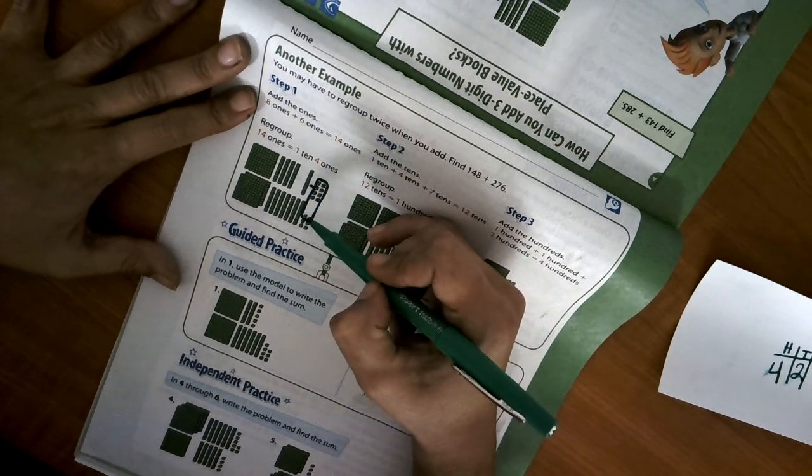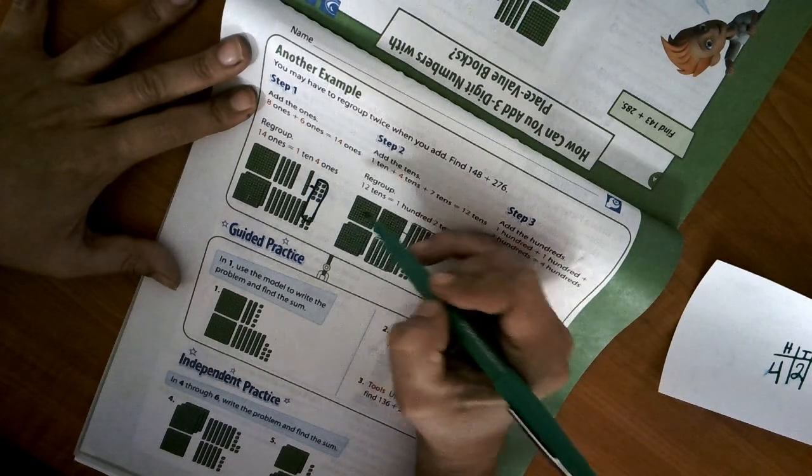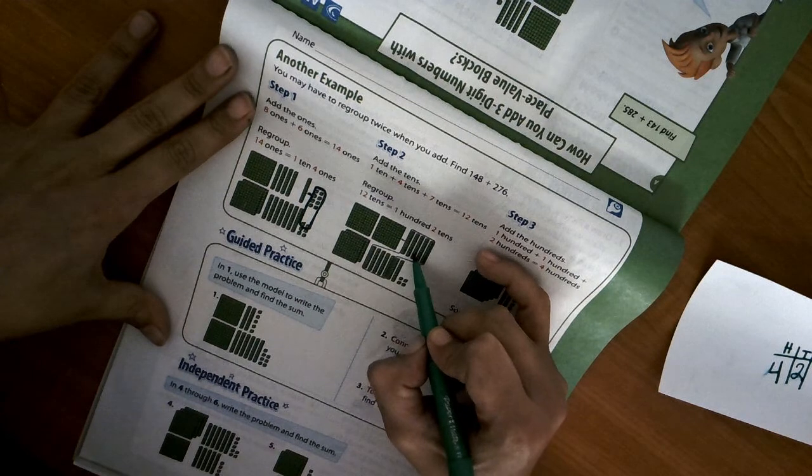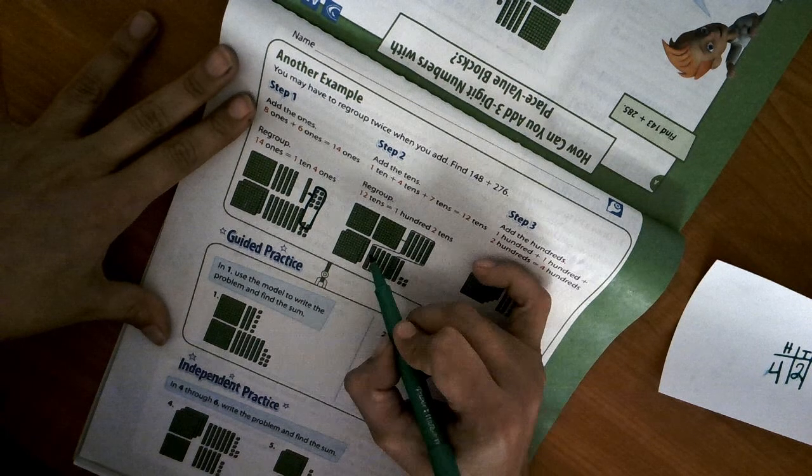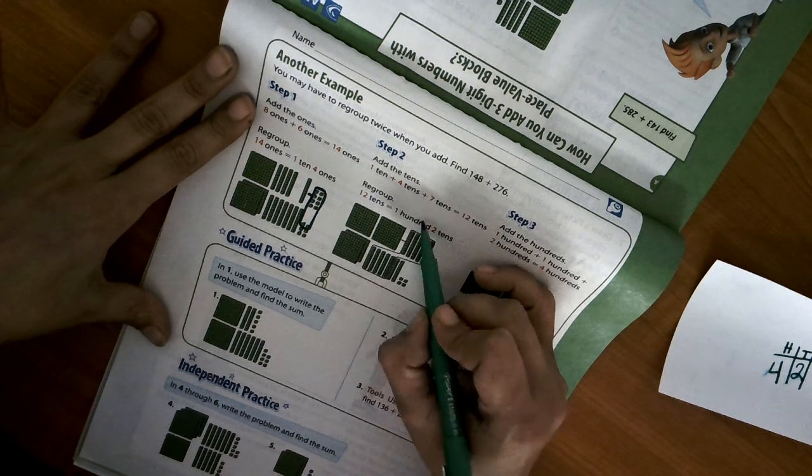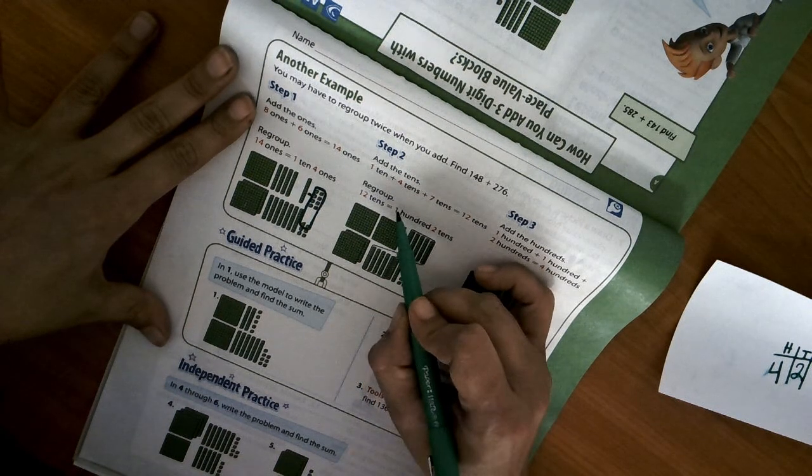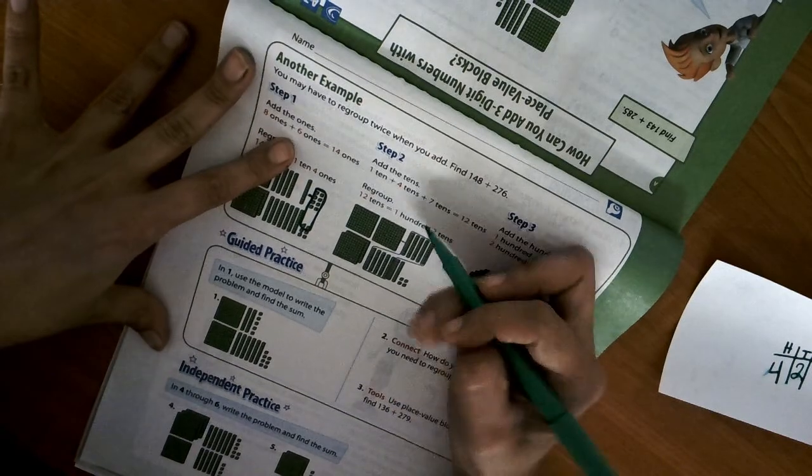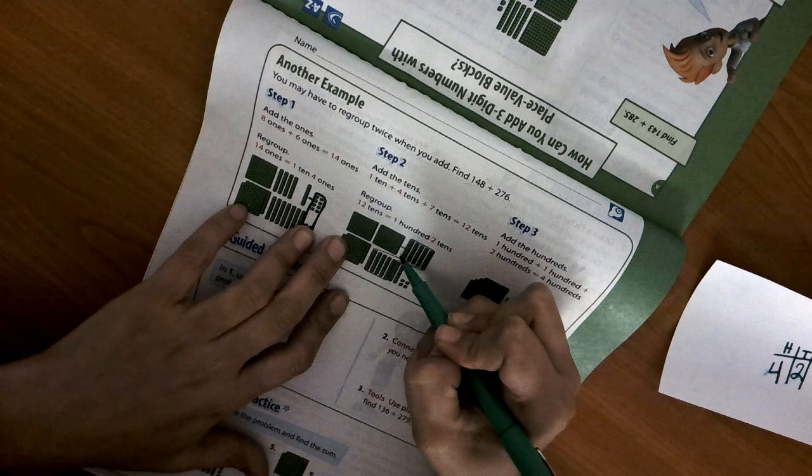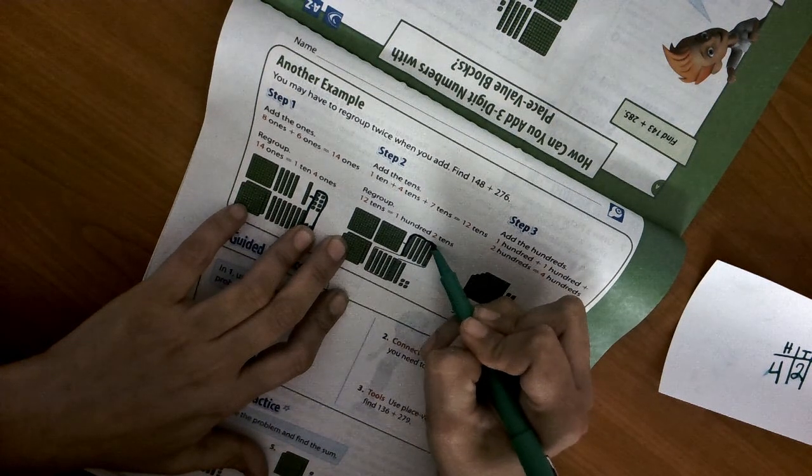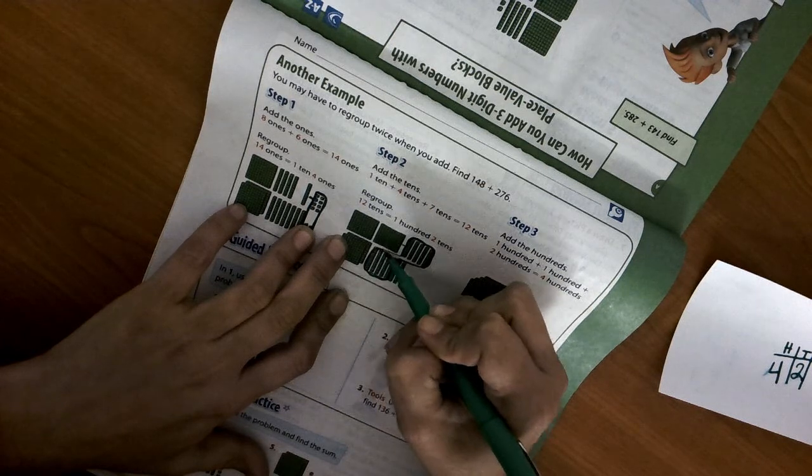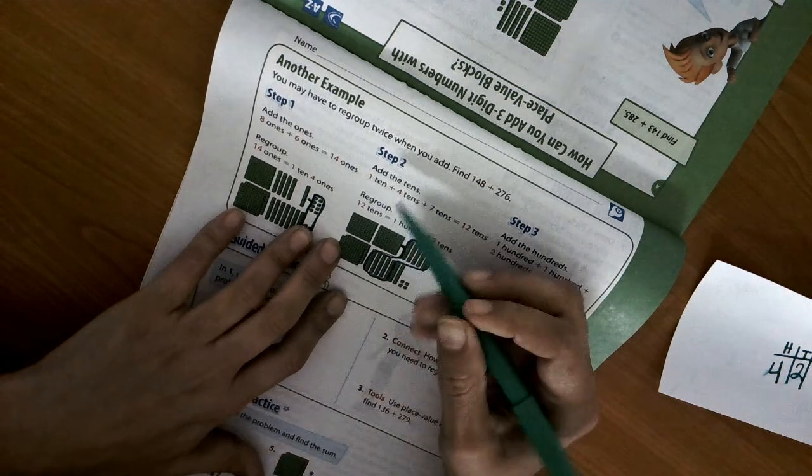Now that we regrouped our ones, we need to go and count our tens. Add our tens. 1, 2, 3, 4, 5, 6, 7, 8, 9, 10, 11, 12. There are 12 tens. So we need to regroup because our magic number is 10. So we're going to circle 10 tens. And they already did it for us. So circle your 10 tens, and once you circle those 10 tens, they're going to regroup next door.